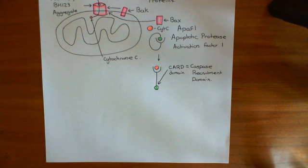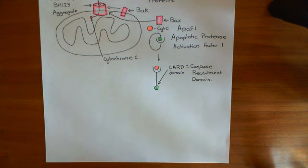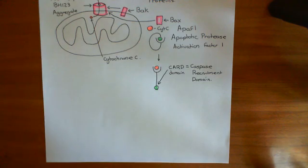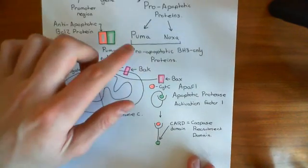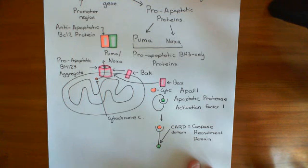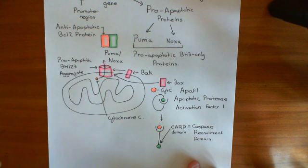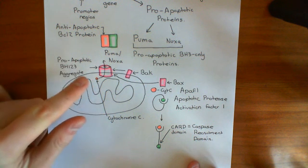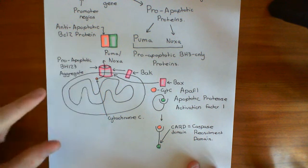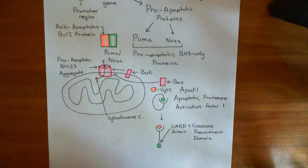Welcome to this next video on the intrinsic pathway of apoptosis. So far what we've seen is that if you suffer DNA damage, P53 levels will go up. P53 will then lead to increased expression of these two pro-apoptotic BH3-only proteins, Puma and Noxa. Puma and Noxa will then lead to the formation of pro-apoptotic BH123 aggregates in the outer membrane of the mitochondria, which will then release cytochrome C.